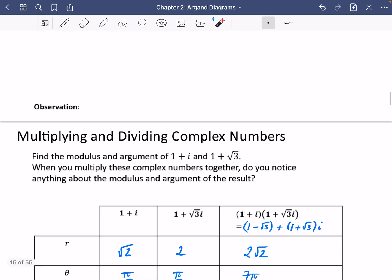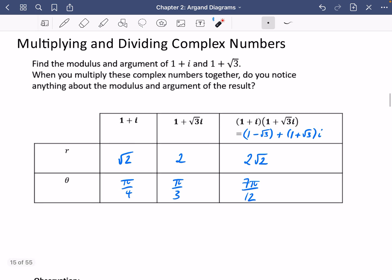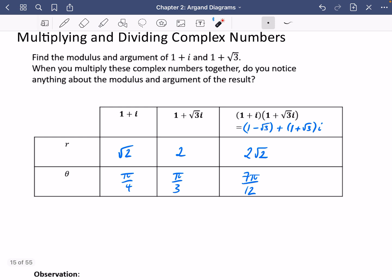OK, so I have already calculated these to save us a bit of time. You should have got for 1 + i, its modulus is √2 and the argument was π/4. And for 1 + √3i, the modulus is 2 and the argument is π/3.